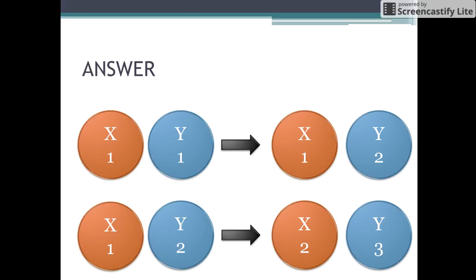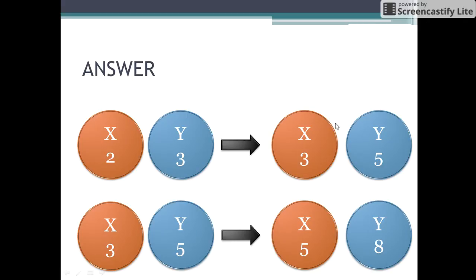Now the two x type of stars and three y type of stars collide in the next step to form two plus three, that is five y type of stars. These three y type of stars get converted to three new x type of stars. Again, in the next step, these three x type of stars and five y type of stars take part in the next collision, forming three plus five, that is eight y type of stars, and these five y type of stars are transformed into five x type of stars.